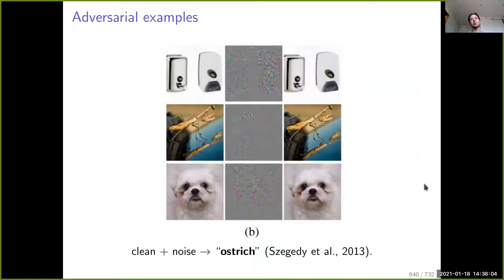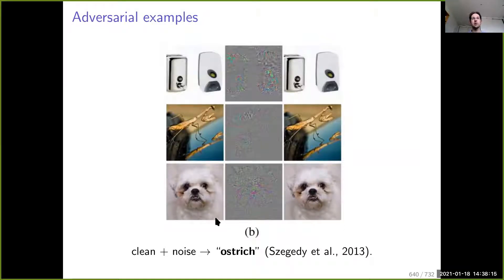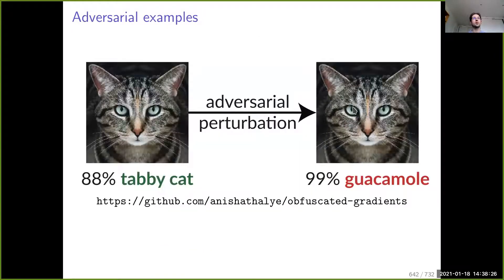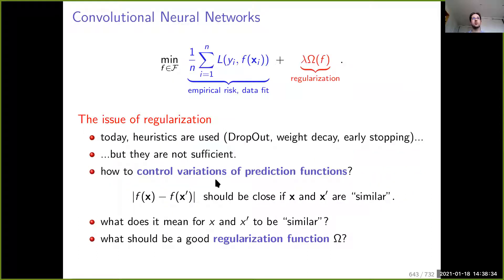Another example from a 2013 paper shows images that, after a small perturbation — amplified in the middle — are classified as an ostrich. There are also fun examples such as a tabby cat that becomes guacamole after adversarial perturbation. This is quite intriguing and it is an interesting and important problem to understand why adversarial examples exist and how to correct these issues.